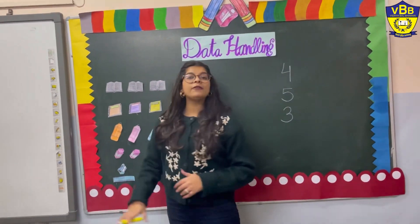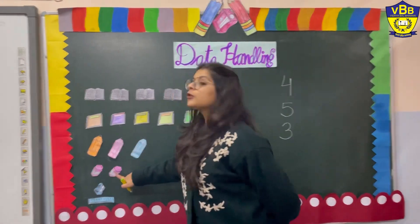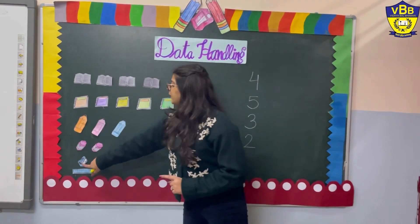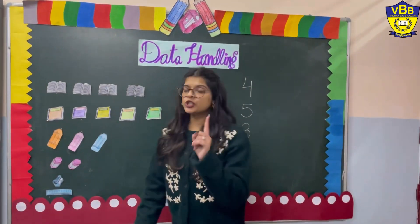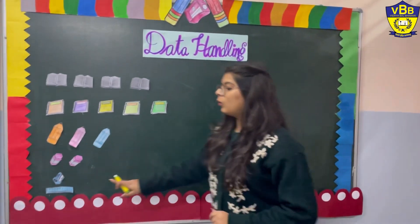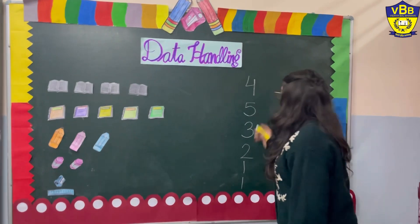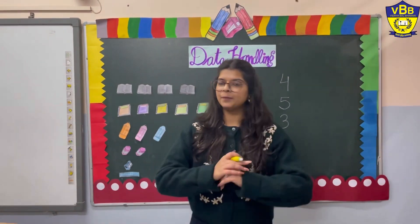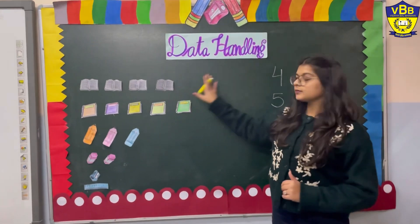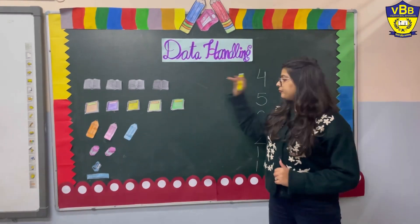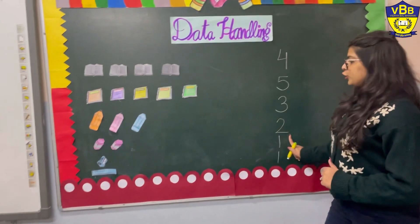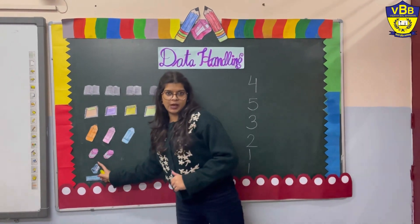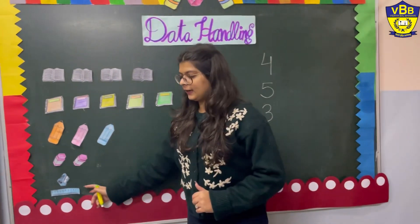Now let us count the remaining items: one sharpener and one scale. So all the items she has put in her bag are: four books, five notebooks, three pencils, two erasers, one sharpener, and one scale.